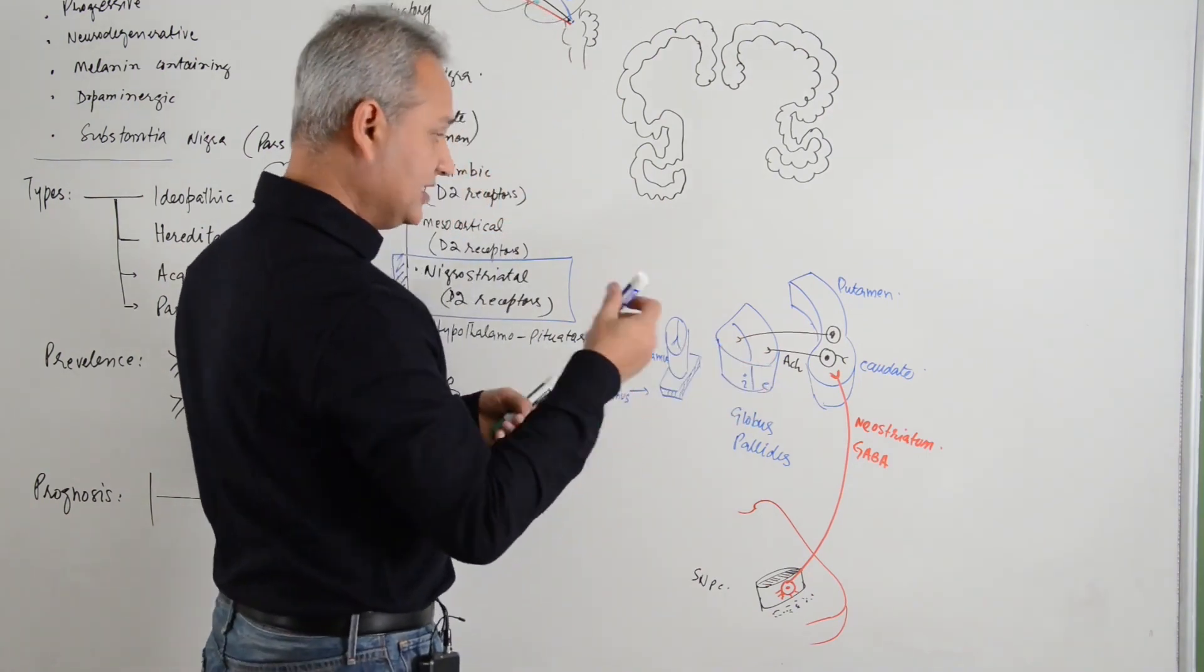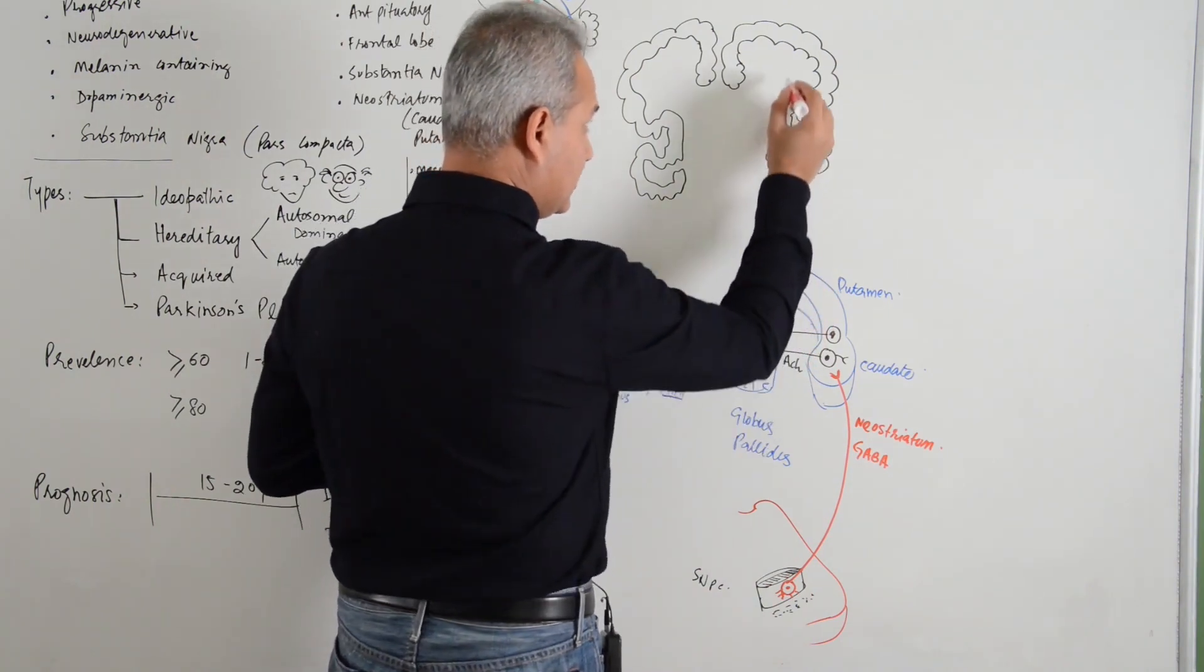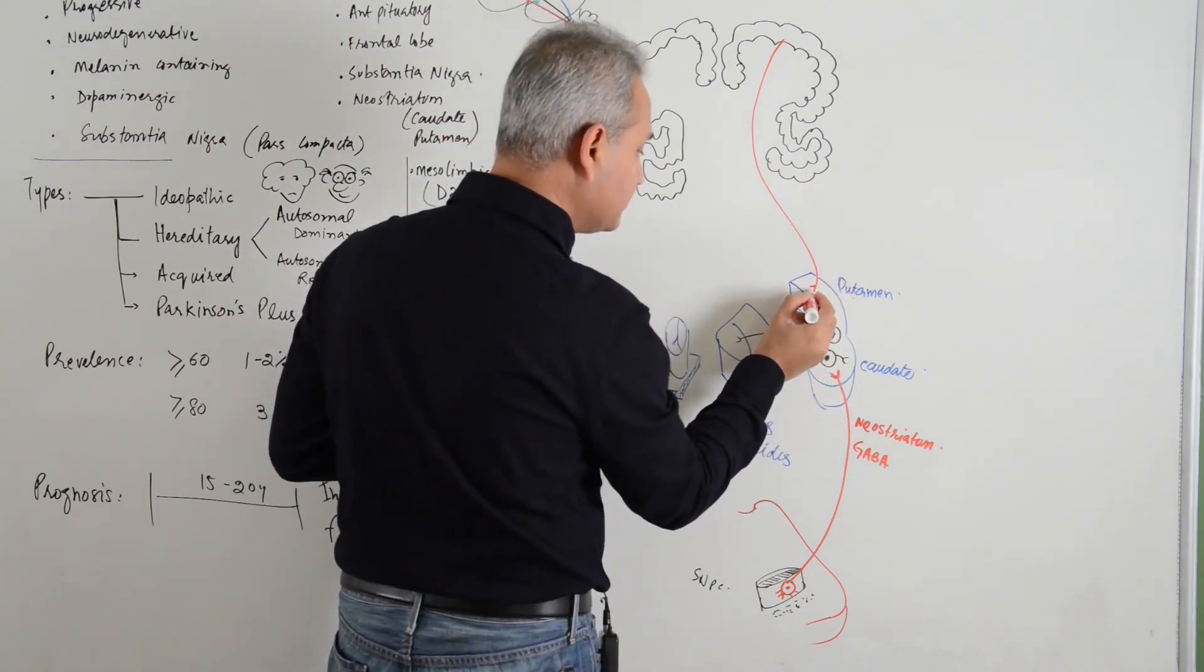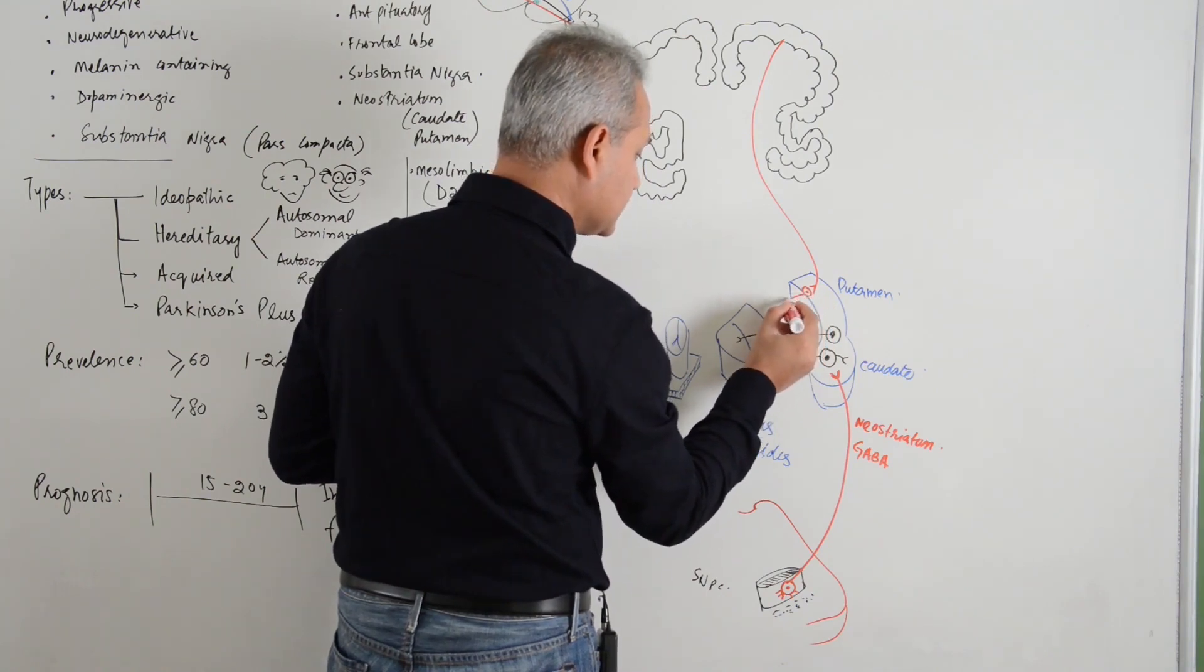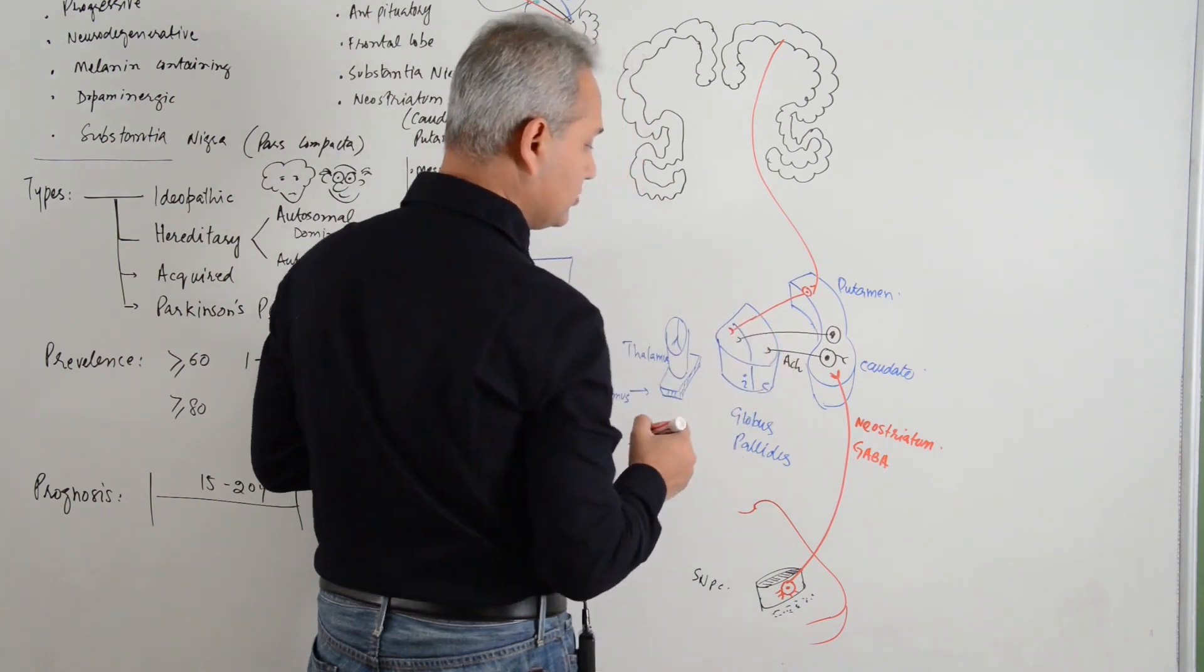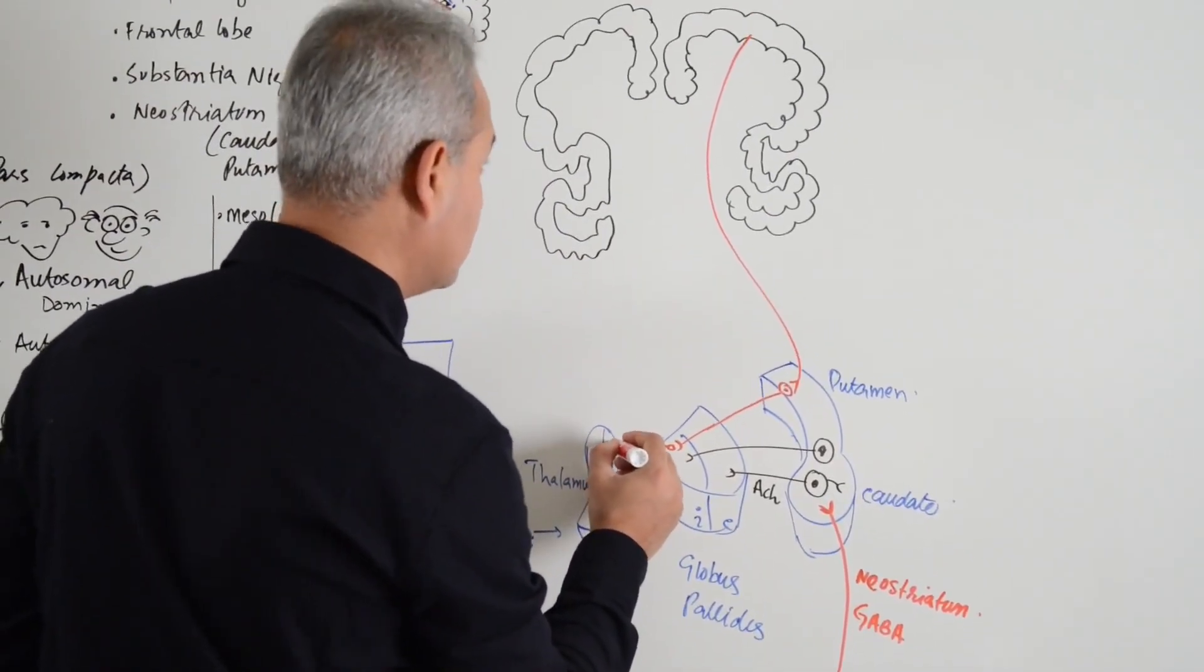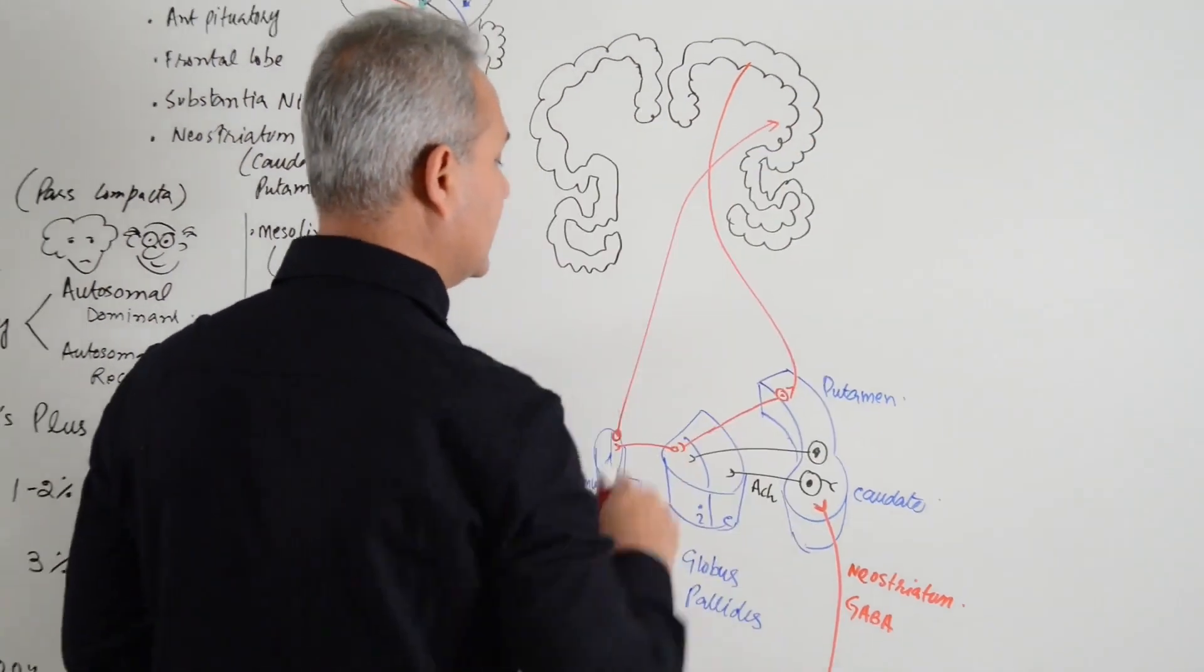You know the pathway, the direct pathway goes like this. Fibers come from the motor cortex into the striatum. From there fibers go to the globus pallidus internus. From there fibers will go to the thalamus and from thalamus these would go back to the motor cortex. That is the direct pathway.